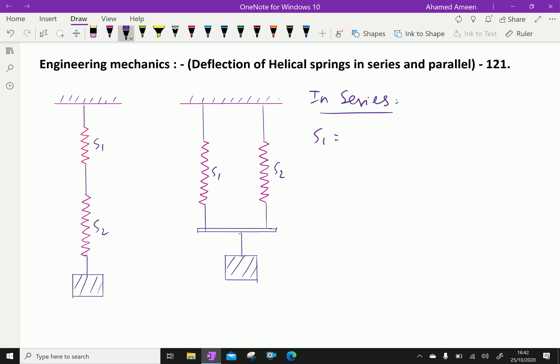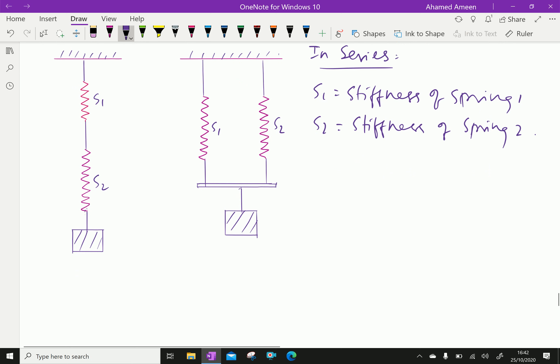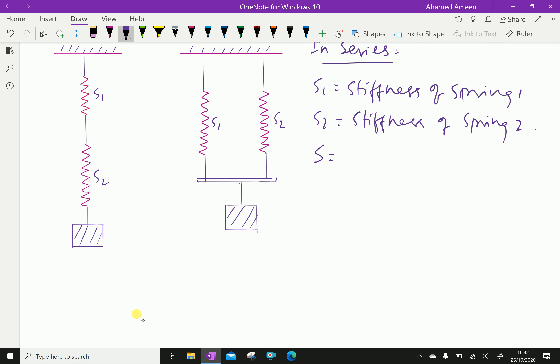Let S1 equal stiffness of spring 1, S2 equal stiffness of spring 2, and let S equal equivalent stiffness of two springs.